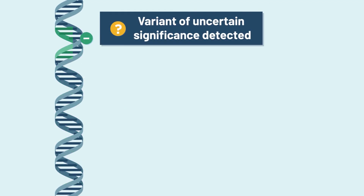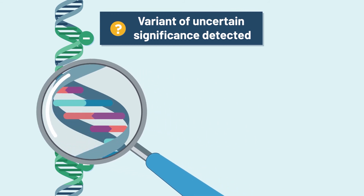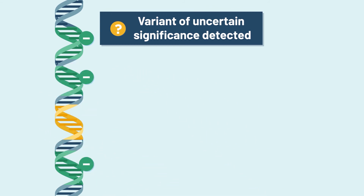Variant of uncertain significance detected. Not all gene changes are linked to an increased risk of cancer. Variant of uncertain significance detected means that a change was found in one of the genes tested, but the genetic experts do not know if it is linked to cancer risk. This is also called an inconclusive result.